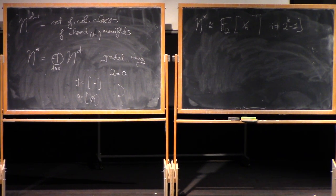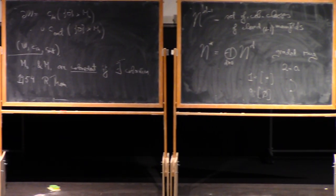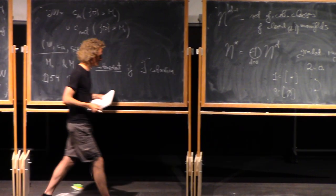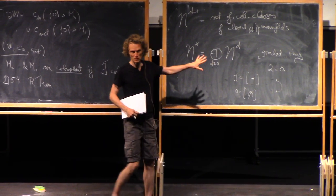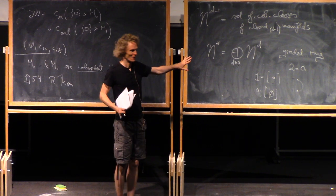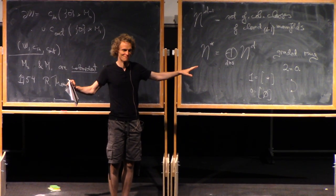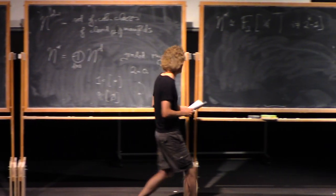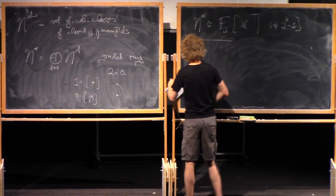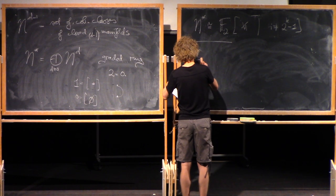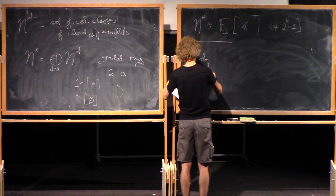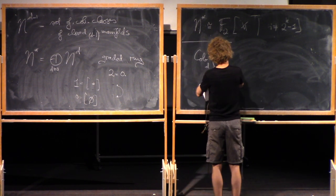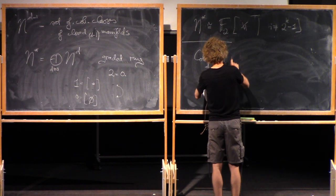So that completely determines this question of classifying manifolds up to cobordism. But what we'll talk about in these lectures is not so much whether things are cobordant, but if you have some cobordant things, in how many ways are they cobordant? So we'll call that Cob_d of M0, M1.